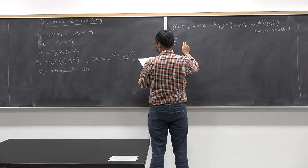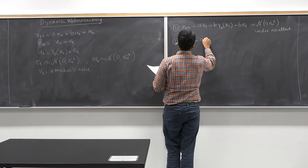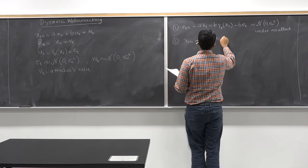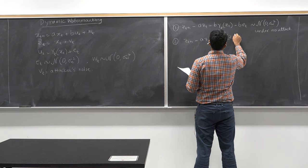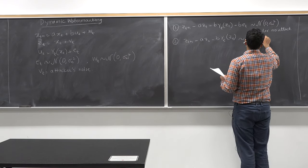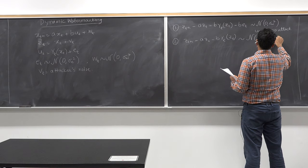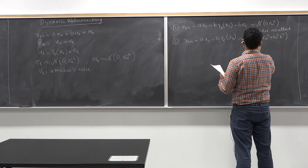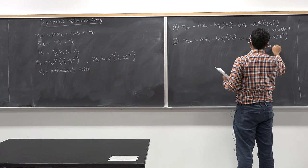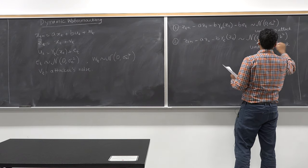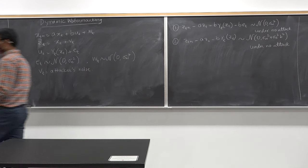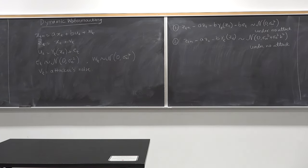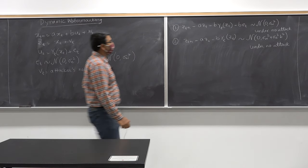The second quantity was z_{t+1} minus a*z_t minus something similar. This is where we stopped in the previous class. The question for today's class is to come up with a detection strategy for checking these conditions.